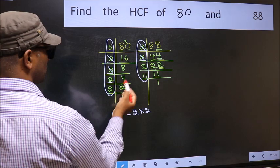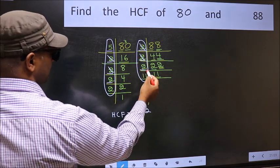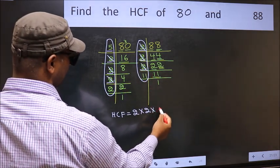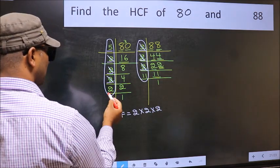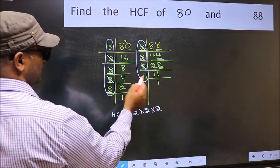Next number 2. Do we have 2 here? Yes. So cut 2 right here. Next number 2. Do we have 2 here? No.